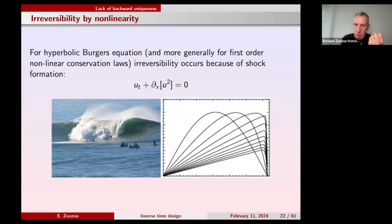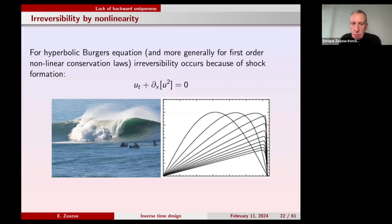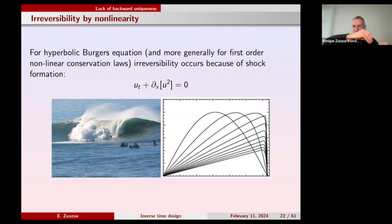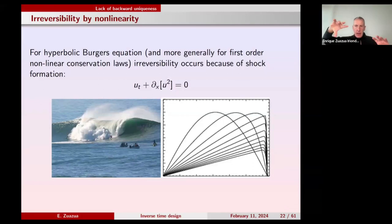In the Hopf-Cole transformation, they pointed out that in some specific cases, solutions could lead to shocks and breaking waves. They realized that further information was needed. In particular, when the solution is constituted by two smooth arcs, being a weak solution in each piece is not sufficient. We need the so-called Rankine-Hugoniot condition, which determines the velocity of propagation of the shock.